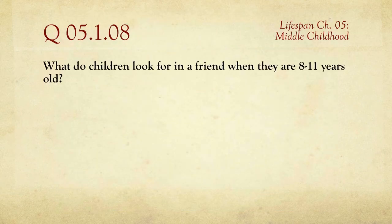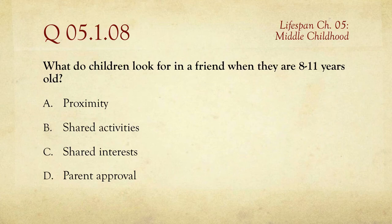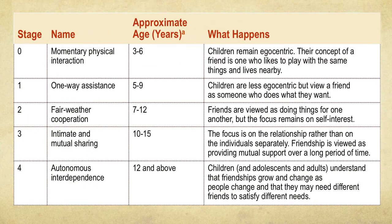Question number eight: what do children look for in a friend when they are 8 to 11 years old? Do they look for proximity, shared activities, shared interests, or parent approval? Our book tells us that shared interests is the major goal. The idea is that they want to do things they both have in common — shared interests can be a very quick and easy way of establishing a relationship.